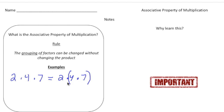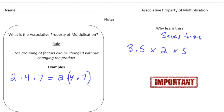This only works when you're multiplying. Again, why learn this? It saves time. Here's an example: if I have 3.5 times 2 times 5, according to order of operations I'd have to do 3.5 times 2 first. But I'd rather multiply 2 times 5 first because I know that's 10, and then 10 times 3.5 gives us 35 as our answer.